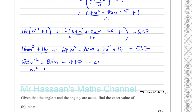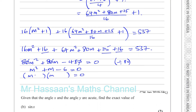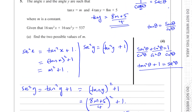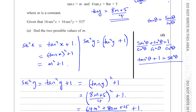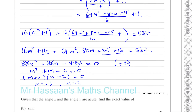Dividing by 80 altogether gives M squared plus M minus 6 equals 0. We can factorize this since 3 times 2 is 6 — we need a difference of 1 and a product of negative 6. So it factors as M plus 3 times M minus 2 equals 0. Therefore M equals negative 3 and M equals 2. Let's check if there are any conditions attached — the question says find the two possible values of M, so those are the two answers.